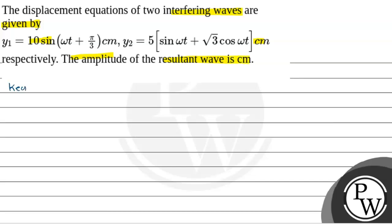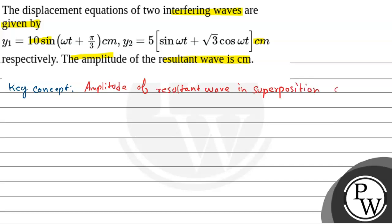The key concept to know here is the amplitude of the resultant wave in the superposition of two waves.